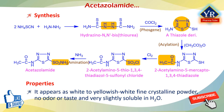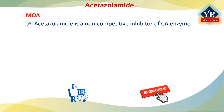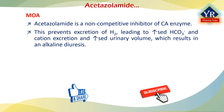Acetazolamide appears as a white to yellowish-white fine crystalline powder with no odor or taste. It is very slightly soluble in water. Its plasma half-life is 3–6 hours. It is not metabolized and is excreted unchanged in the urine. Acetazolamide is a non-competitive inhibitor of carbonic anhydrase enzyme. Inhibition of this enzyme in the kidney prevents excretion of hydrogen, leading to increased bicarbonate and cation excretion and increased urinary volume, which results in an alkaline diuresis.